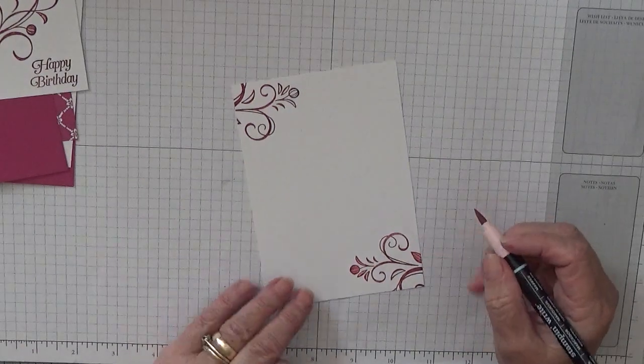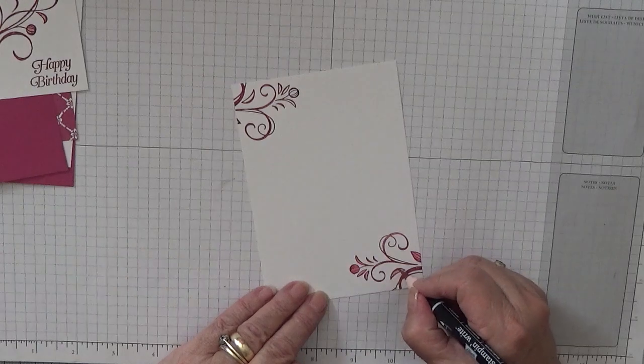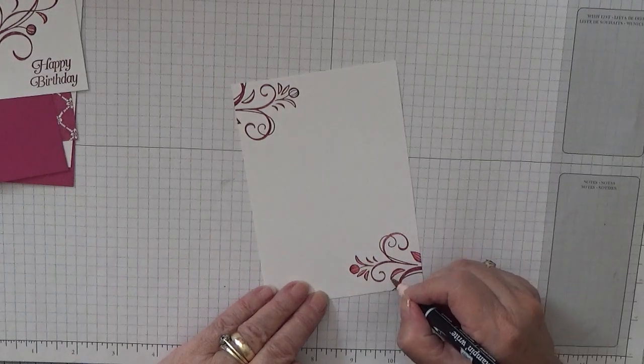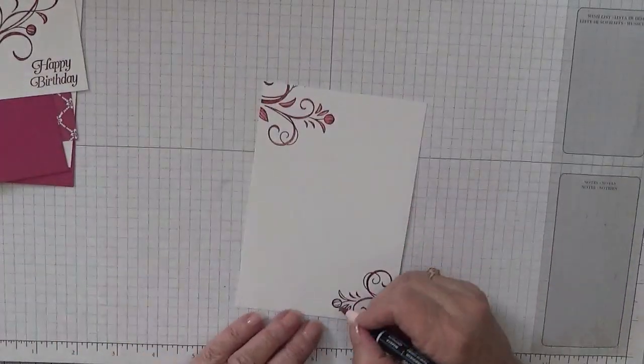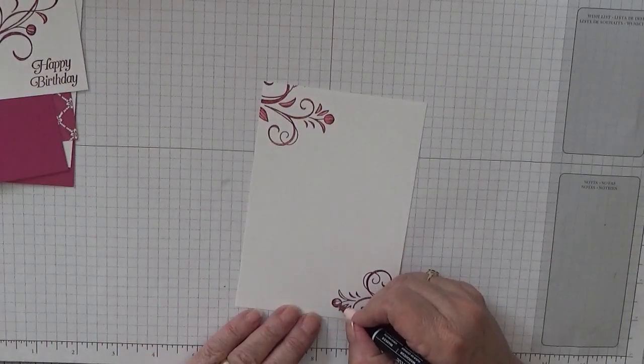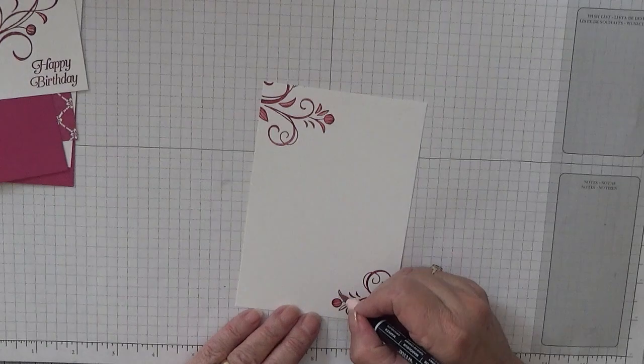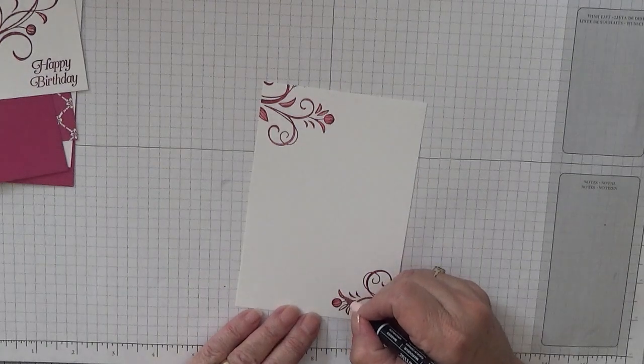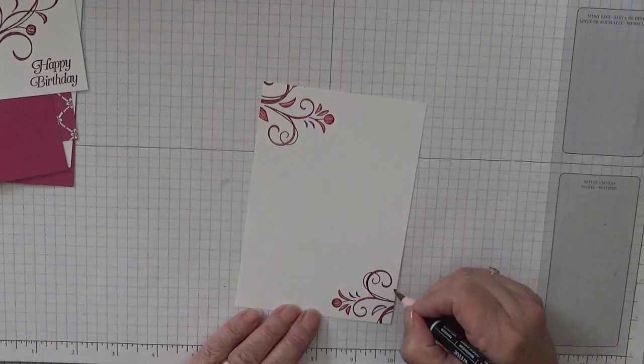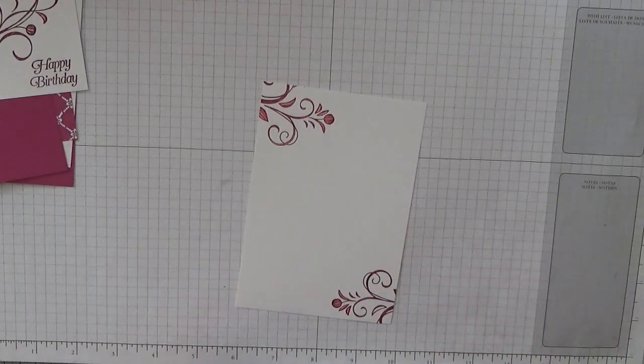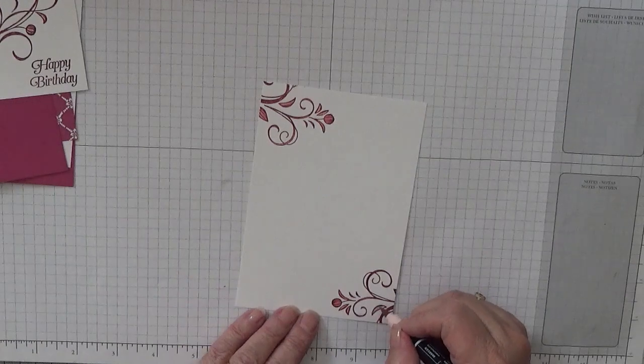My sister from Ireland came over for a visit last week, week before, and she went through all my scrap bin and my dies and my punches, and she either punched or die cut shapes out to take back for her and her granddaughter to make cards.